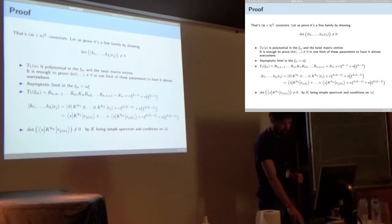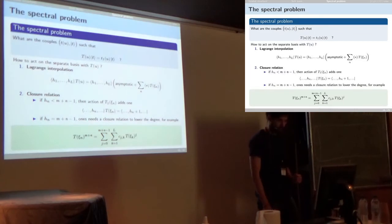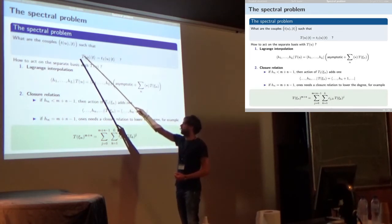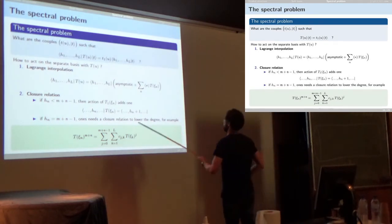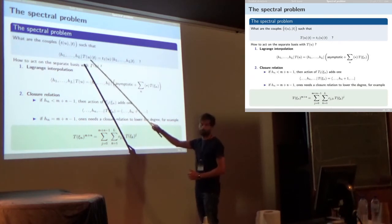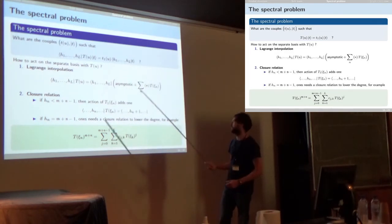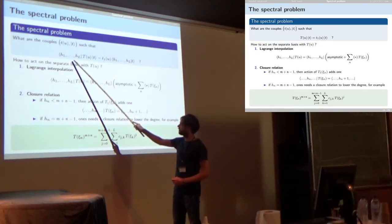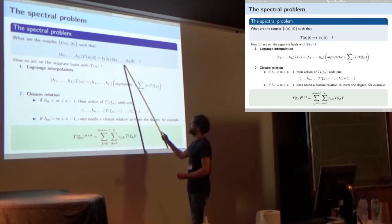We have a basis and claim it is separated, so now we must solve the spectral problem to confirm this. The spectral problem asks: what are the eigenvalues of the T(u) polynomial and which vector T is an eigenstate? You can rewrite this by comparing numbers — the coordinates in the separated basis — rather than comparing states directly. If for each h_1,...,h_L the covector relation holds, then you have shown you have an eigenvector. The key is to understand how T acts on the covectors, by interpolating at the inhomogeneity points ξ_n, and fixing the asymptotics from the supertrace of the twist.